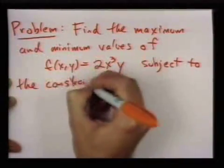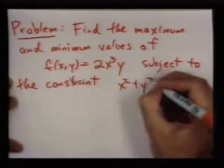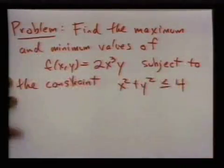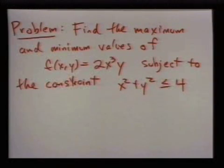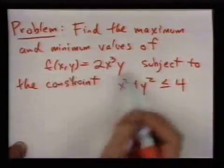So this is saying we're inside the circle of radius 2 and we want to find the biggest and smallest values of this function inside there.